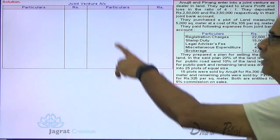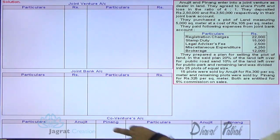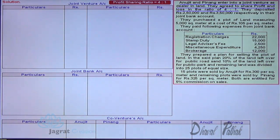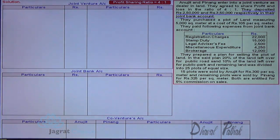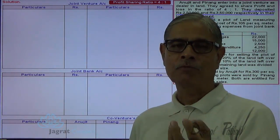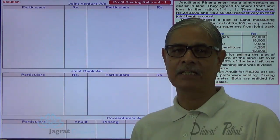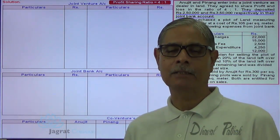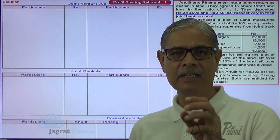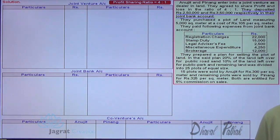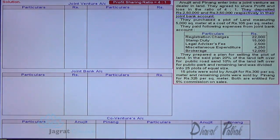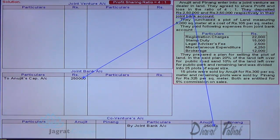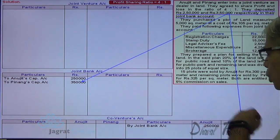This is the detail of the sum. Here I prepare joint venture account, joint bank account, and partners' capital accounts for Anujit and Penang. They have agreed to share profits and losses in the ratio of 4 to 1. They deposited 2,50,000 and 3,50,000 respectively in the joint bank account. The amount deposited is the contribution by the partners. Joint bank account is debited as the receiver, and the co-venturers are givers of the funds — credit the giver, but they have given the amount as capital. So capital account is credited: joint bank account debit to Anujit capital account, and joint bank account debit to Penang capital account.